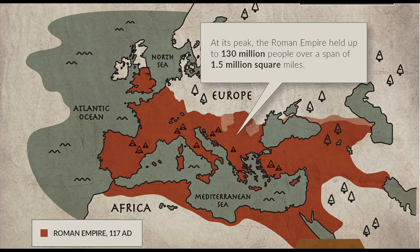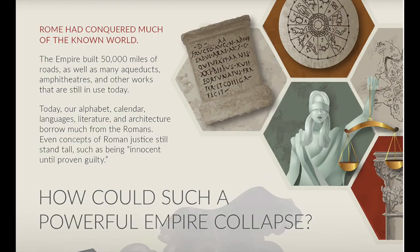Currency and the collapse of the Roman Empire. Roman currency debasement plotted versus the cause of death for Roman emperors. The Roman Empire at its peak held up to 130 million people over a span of 1.5 million square miles. In red you can see the Roman Empire at around 117 AD — many of us in school are familiar with this map showing the overall pattern of the Roman Empire spreading across the old world in Europe.